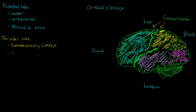The parietal lobe is also responsible for spatial processing, or spatial manipulation — it helps orient yourself in three-dimensional space and understand the space around you more generally. For example, if I wanted to reach out and grab a cup of coffee, I could use my prefrontal cortex to plan the movement and my motor cortex to complete it, but I also need my parietal cortex to tell me where that coffee cup is in front of me. Other things, like knowing how to navigate around your house or town, are also what we mean by spatial manipulation.